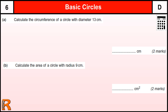Basic circle rules formula. Grade D, level 6. Calculate the circumference of a circle with diameter 13. So we have to know these formulas. We need to know the circumference of a circle formula is pi times the diameter.